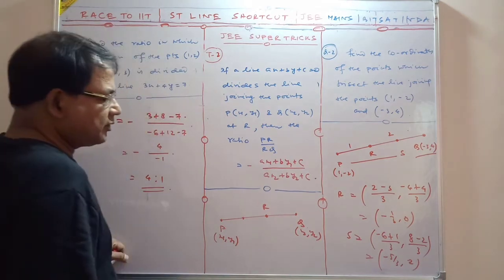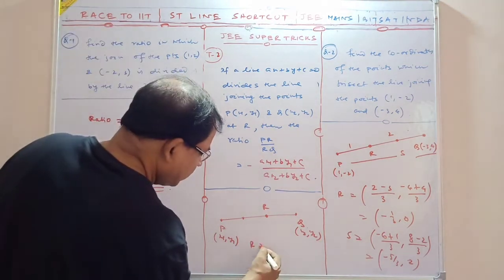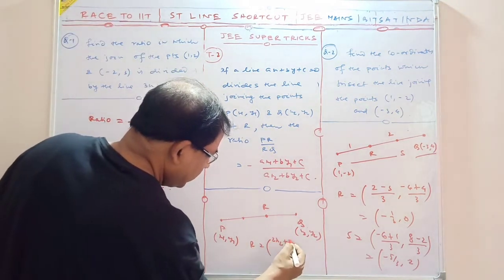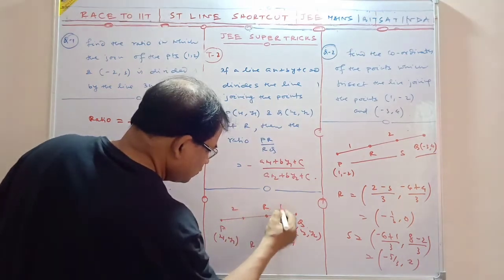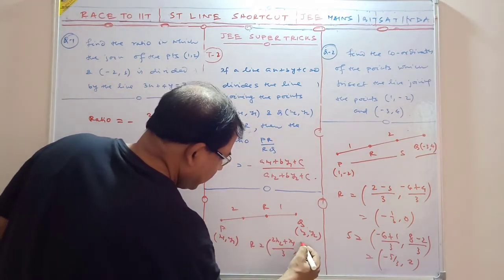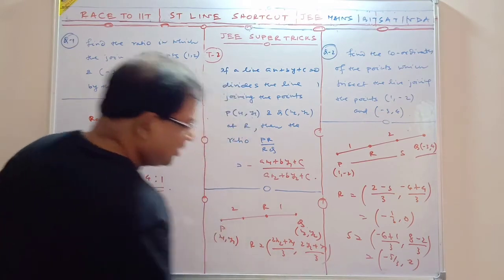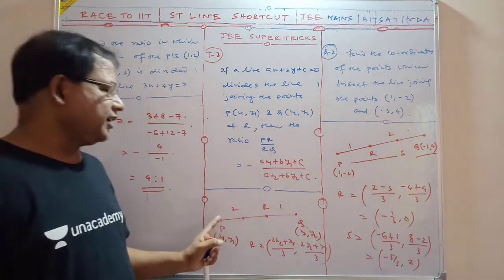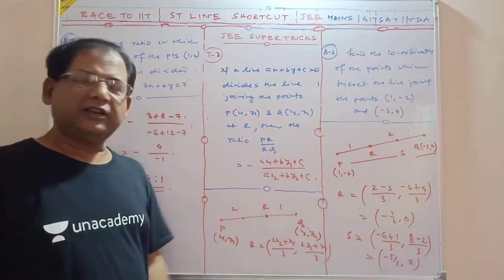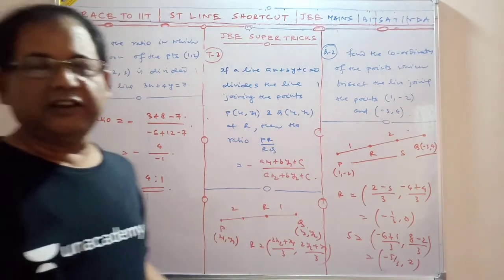What is this? R point ka coordinate? Now R point ka coordinate, you will say, 2x2 + x1—this is 2, this is 1—by 3. And 2y2 + y1, by 3. Then this point—find it. So this is the same way you can find out the second point as well.